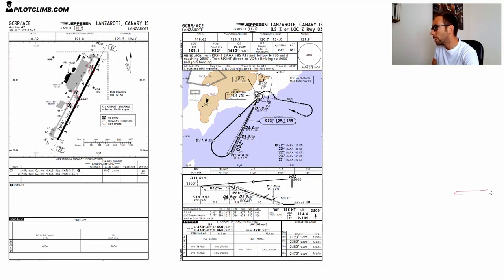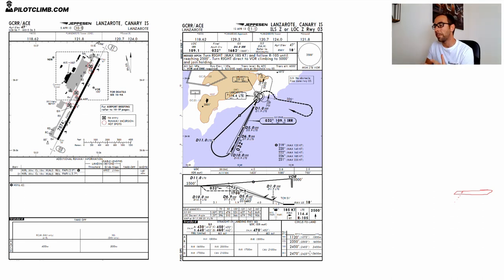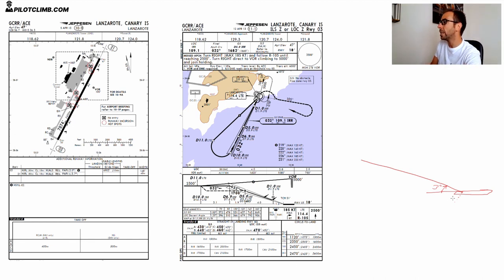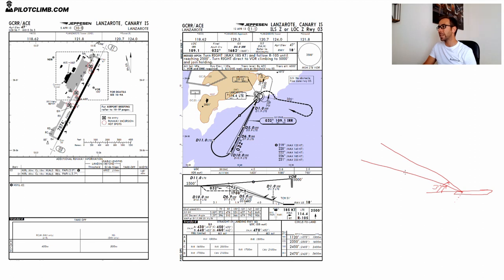Let me draw a runway here. This is the touchdown zone, which is where the wheels of your plane should touch. A three-degree PAPI angle means that if you take the touchdown zone and draw the final descent, three degrees is this angle here. The steeper the angle, the steeper will be your descent. A four-degree descent angle would be something like this — higher and steeper. The drawings are just to make the concept clear.